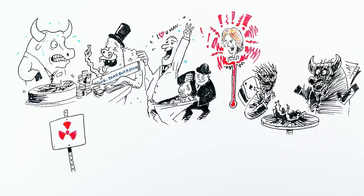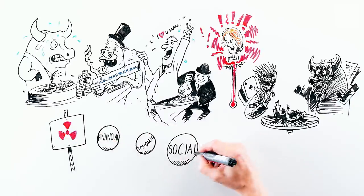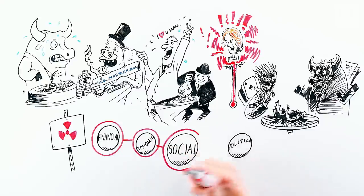The fallout from the crash has been fourfold: financial, economic, social, and political. So now, let's connect these dots.